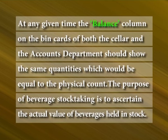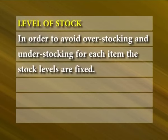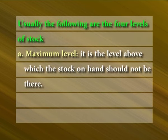The purpose of beverage stock taking is to ascertain the actual value of beverages held in stock. The stock taking of a cellar involves the physical counting of each type and size of beverage and recording quantities for costing. In order to avoid overstocking and understocking for each item, stock levels are fixed. Usually, the following are the four levels of stock.